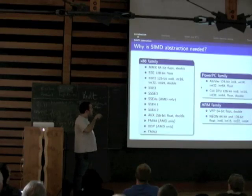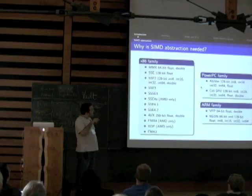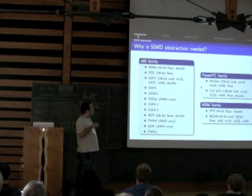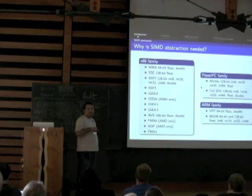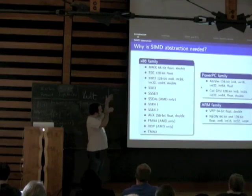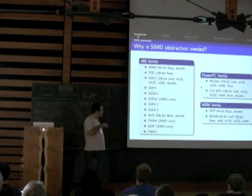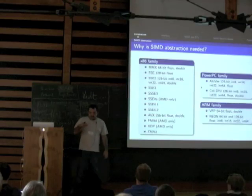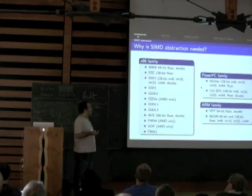There are a lot of differences between all these extensions, either in the size of the vector you can manipulate — 64 bits for MMX, 128 bits for all the SSE families, 256 bits for the newest AVX — and next to this mainstream SSE stuff, there were some other spin-offs providing additional vectorized operations.